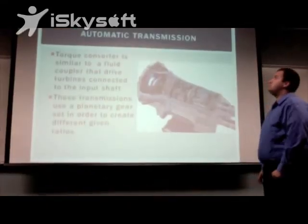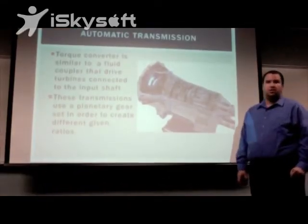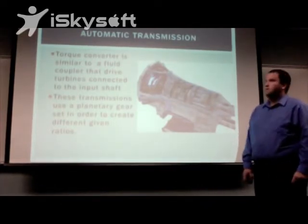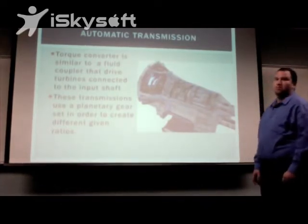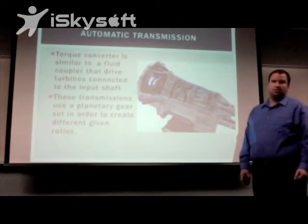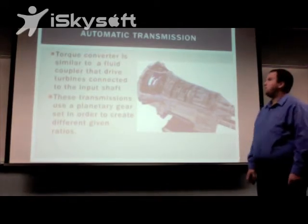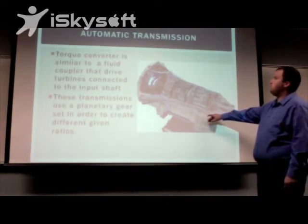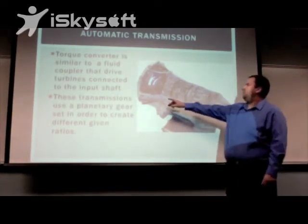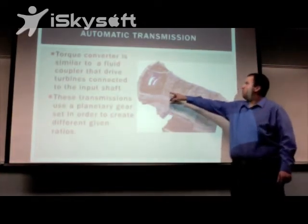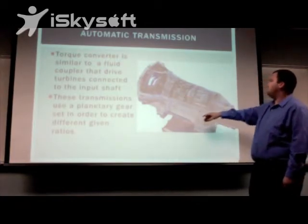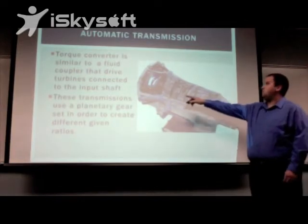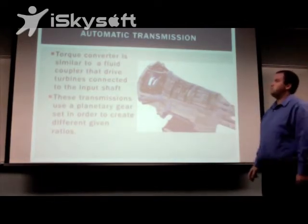The automatic transmission saw its inception from the need in the early 1940s and 50s for an easier transmission to use. However, today's transmission has come a long way since the inception of the Hydromatic. Here we can see an eight-speed automatic transmission where you can see the torque converter, clutches, planetary gears, and the valve body exposed. We're going to talk about these individual parts in the following slides.